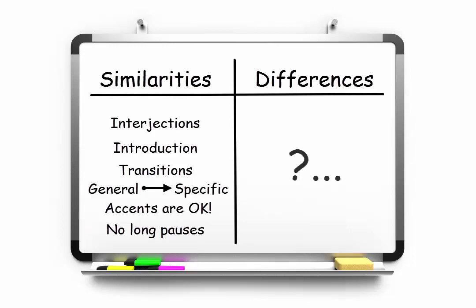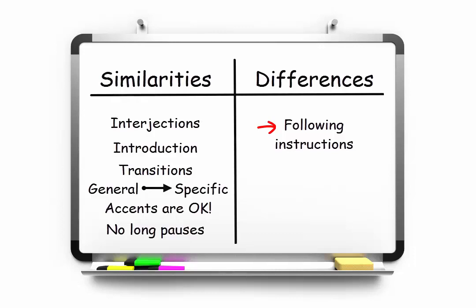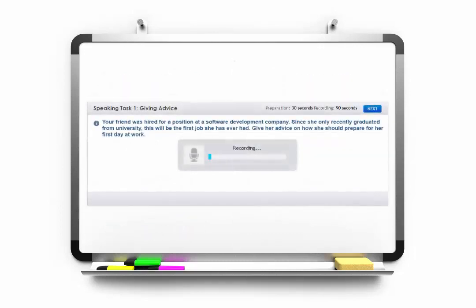So what makes one of these responses level 7 and one level 12? The most obvious difference relates to how well each speaker follows the instructions in the task. The instructions for this speaking task state that you've got a friend who's recently been hired by a software company and you're supposed to give her advice about her first day of work.